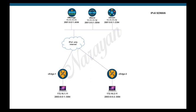Attached is the topology we will use for this demo. We have an existing network of two edge devices connected via an IPv4 transport providing connectivity to the controller components as well as providing data plane IPsec connectivity between them. We will then add a secondary IPv6-only internet transport and connect the second interface of our SD-WAN devices to it and establish both the control plane and data plane connectivity between them.